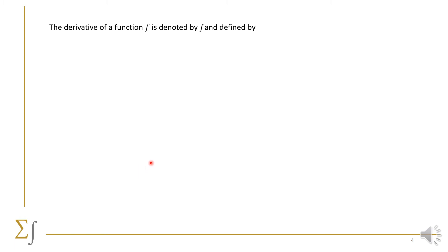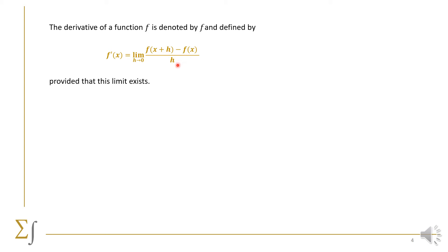In view of our discussion in the previous slides, we come to the formula for the derivative as a limit. It is: f′(x) equals the limit as h goes to zero of f(x+h) minus f(x), all over h, provided that the limit exists.